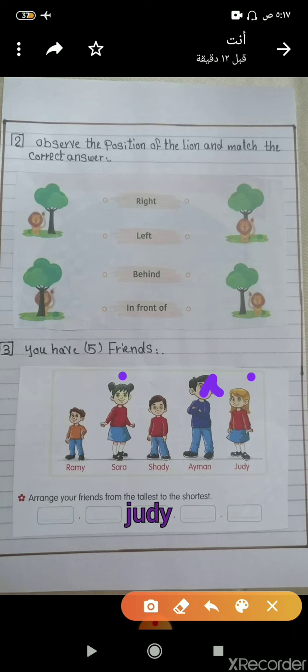Who is after Jody? Shady. Excellent. And then, the last is Romy. So we made the arrangement from the tallest to the shortest.